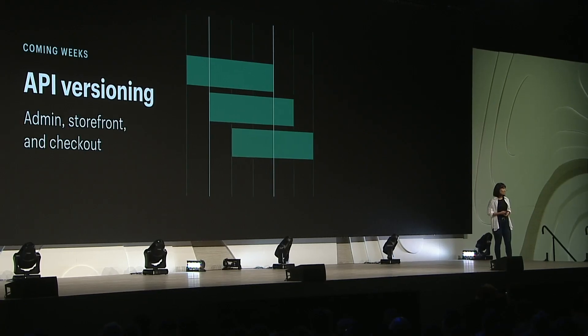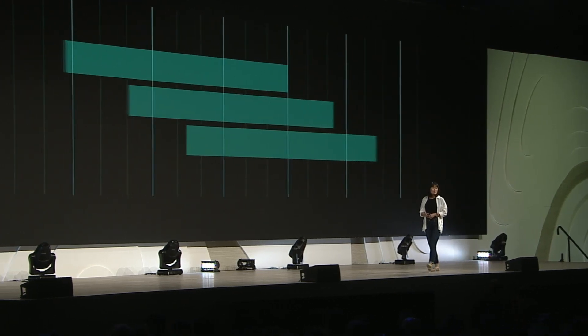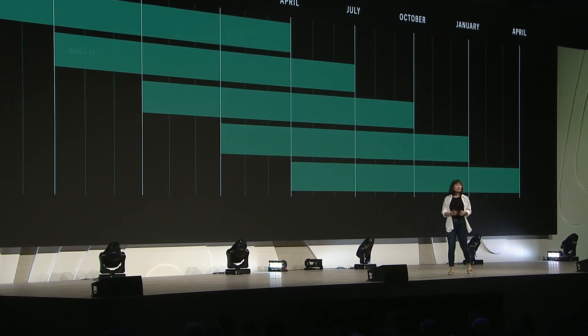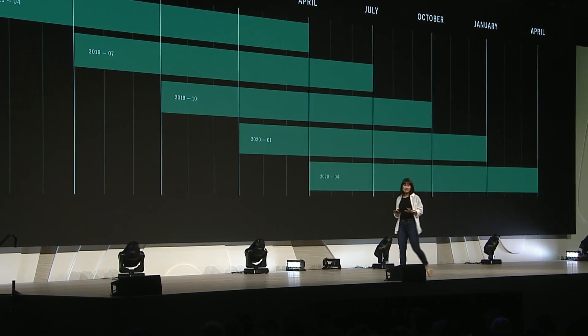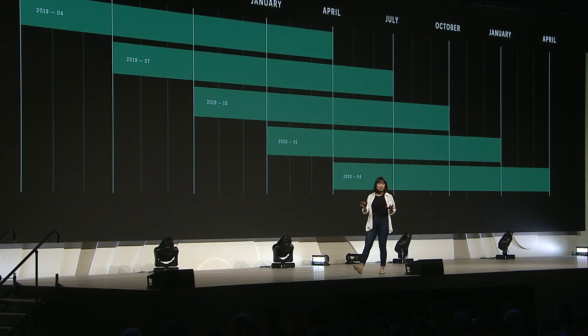Back in April, we versioned our admin API. And today, I'm excited to announce that we'll also be versioning our storefront and checkout API in July. We'll release a new version of these APIs every quarter, and each version will work uninterrupted for at least a year, guaranteed. Even with versioning, we know how much work it takes to upgrade an app when there are major changes, so we're still building features to be backwards compatible as much as possible. Versioning is simply our way to make sure that when we absolutely need to change the API, we let you know well in advance and give you the tools to upgrade smoothly. Versioning the platform is just one of the things we're doing this year to make sure that we have a healthy ecosystem going into the next 10, 20, 100 years of Shopify.